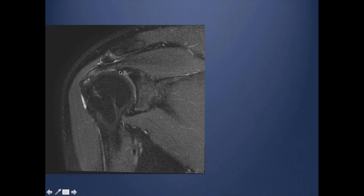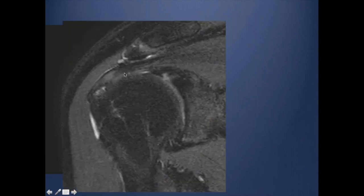And in this case, you can see it has more of a globular appearance and does not have a smooth outline. This is another SLAP lesion as well.